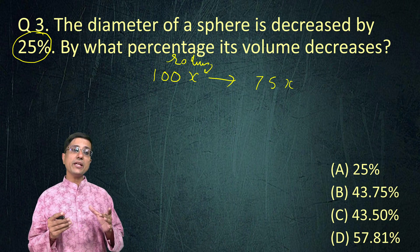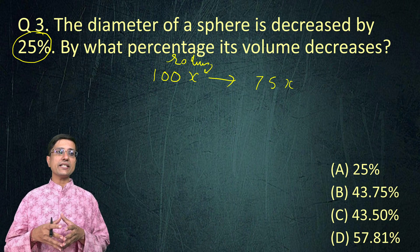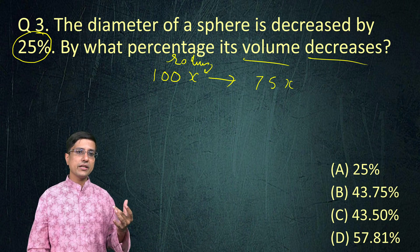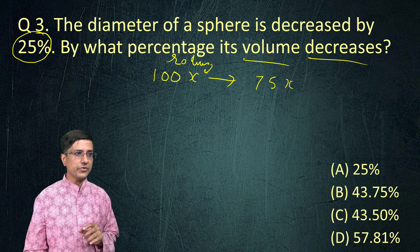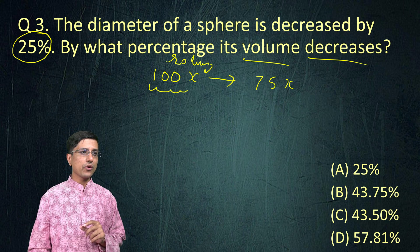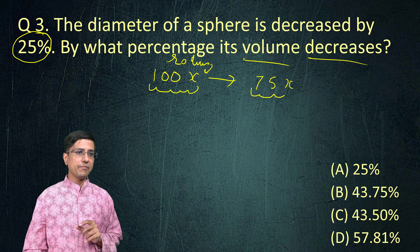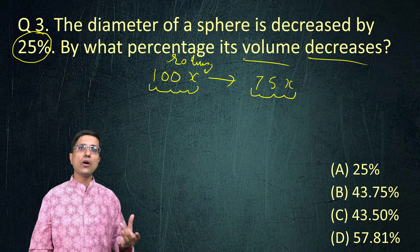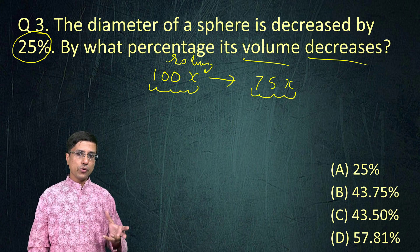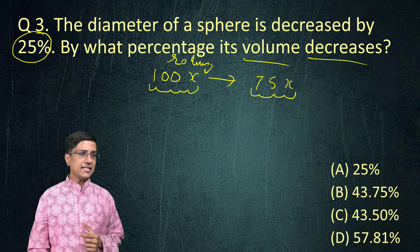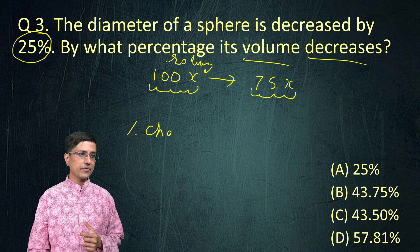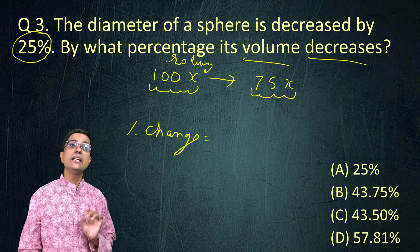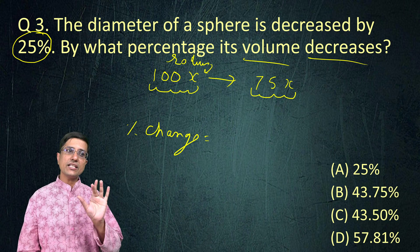We are being asked by what percentage its volume decreases. So we are being asked about the volume. Volume is cube. Volume changes as the cube of this radius, diameter of a sphere. So volume depends as the cube of the radius. So the volume would change as the percentage change. We don't have to write the formula for volume at all. We only need to know that it varies as cube.